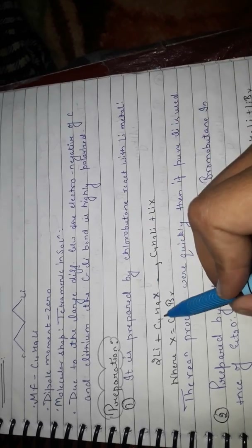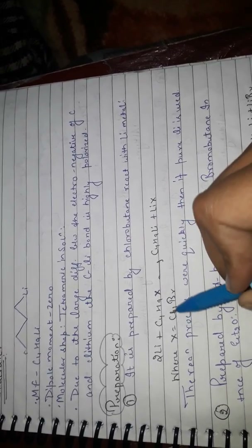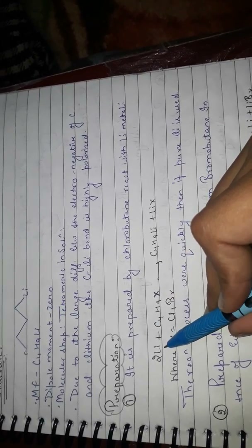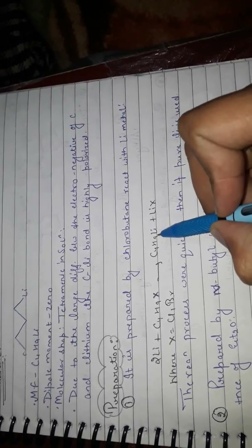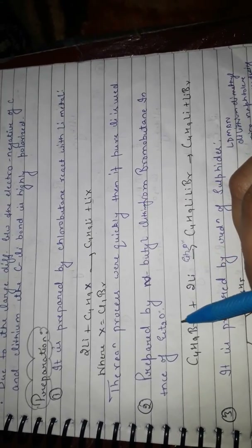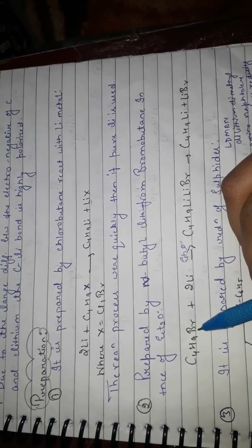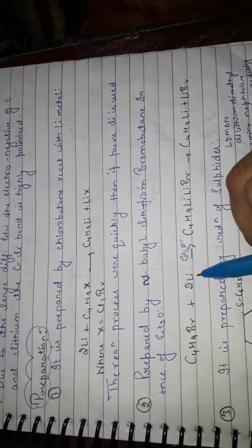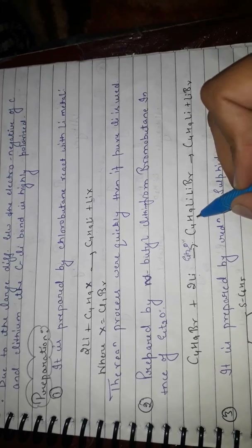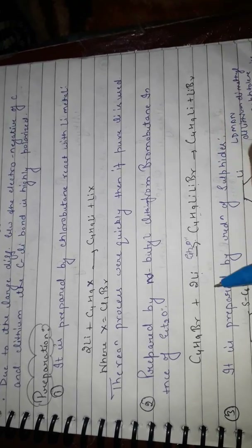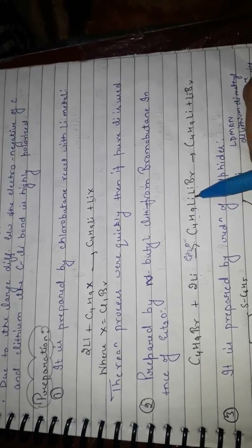First preparation: n-butyl lithium is prepared from chlorobutane or bromobutane (C4H9X, where X can be chlorine or bromine). When it reacts with lithium metal, it forms n-butyl lithium (C4H9Li) with LiX as a side product. Second preparation: bromobutane plus two equivalents of lithium in the presence of diethyl ether forms C4H9Li, with LiBr as a side product.